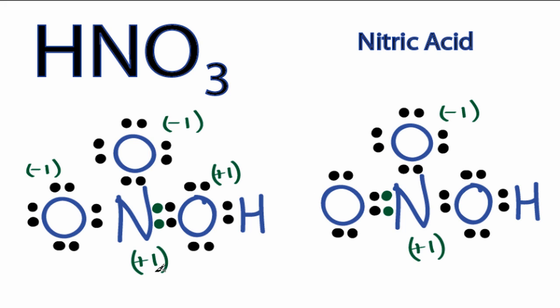Over here, you have a plus 1 on the nitrogen. Then you've got a minus 1 on the oxygen, a minus 1, and then a plus 1 on this oxygen. That doesn't really make sense for an oxygen to have a plus 1. It's more electronegative.